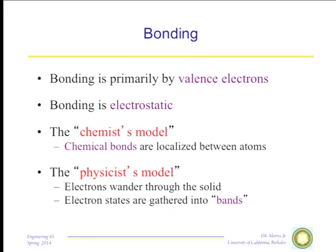The first model is the chemist model — the old Pauling model — where you focus on individual bonds and look at how chemical bonds are formed, imagined to be localized between atoms. This leads to metallic bonding, ionic bonding, and so on. Many properties of materials can be understood this way. However, many properties cannot. For semiconductors, there's a much better physics model, which recognizes that individual electrons are not localized in bonds — they wander through the whole solid and sit in states spread through the whole solid, gathered into groups called energy bands.